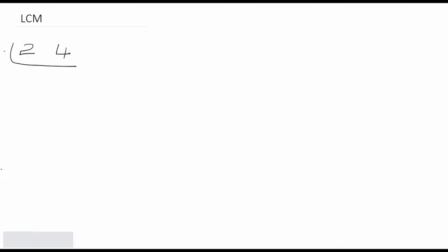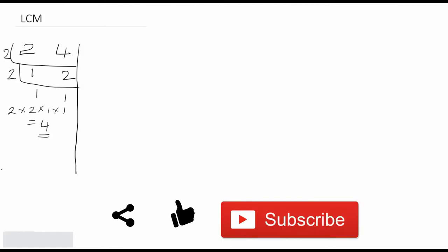For example, we are taking two and four and trying to find the LCM of these two numbers. We divide: two ones are two, twos are two, then two ones are one. So two into two into one into one equals four. This is the LCM — the method which you all know and use.